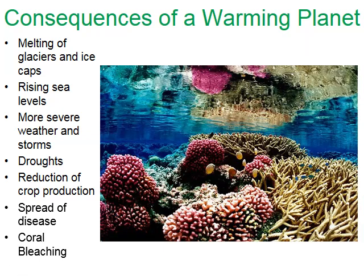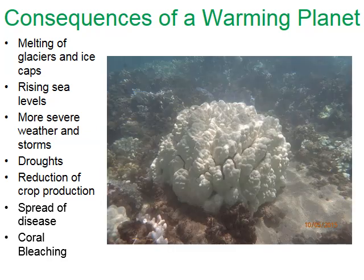The final consequence I want to mention is coral bleaching. Here's a picture of a fairly healthy coral reef — very colorful, lots of aquatic fish. With just a few degrees increase in water temperature, the algae that live inside corals die, and therefore the corals die. Once the corals die, the ecosystem starts to fall apart. We're seeing coral reefs begin to die around the world because of just a few degrees warmer ocean temperatures.